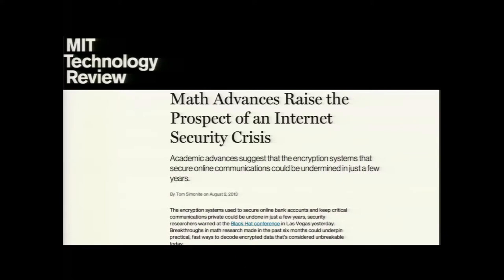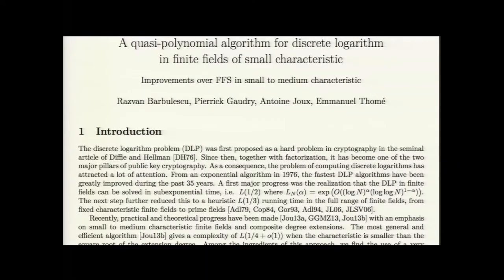So what is the crypt apocalypse? The big picture is this headline: 'Math advances raise the prospect of an internet security crisis.' Academic advances suggest that encryption systems securing online communications could be undermined in just a few years. This is about a quasi-polynomial algorithm for discrete logarithm in finite fields of small characteristic — a big breakthrough in the discrete log problem for small characteristic fields.